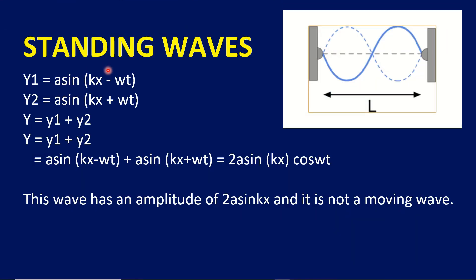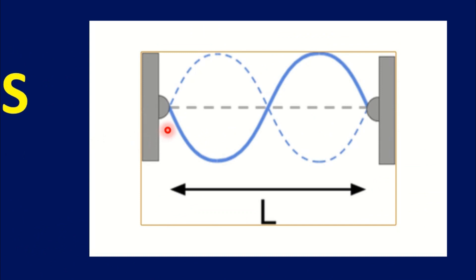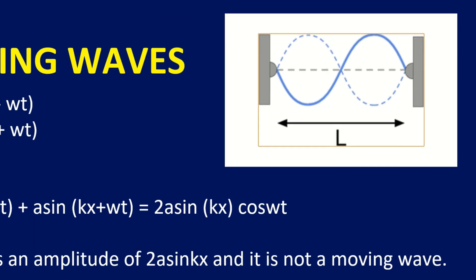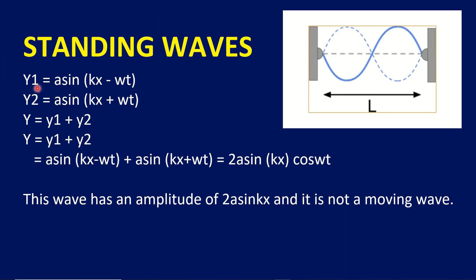Next is standing waves. We have two waves: one incident wave and one reflected wave. These are waves of the same amplitude and frequency. For the incident wave, y1 is equal to a sin(kx minus omega t). For the reflected wave traveling in the negative x direction, y2 is equal to a sin(kx plus omega t).